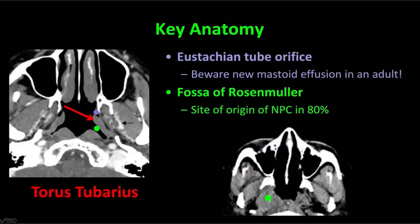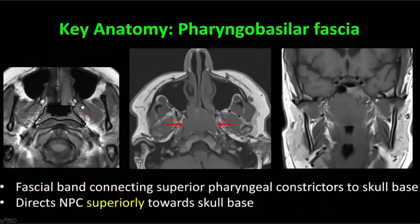Some key anatomy: the key is to look for the torus tubarius, which is the cartilaginous outpouching into the lateral wall of the nasopharynx. Above it you'll find the eustachian tube orifice, and below it is the lateral fossa of Rosenmuller. The torus tubarius is actually the cartilaginous end of the eustachian tube. If there is a mass in the posterior lateral nasopharynx, it can push this up and block off the eustachian tube. That's why a new mastoid effusion in an adult is a really disturbing sign that should make both the clinician and radiologist look in the nasopharynx. Most nasopharyngeal carcinomas start in this lateral fossa of Rosenmuller, providing a perfect scenario for blocking off the eustachian tube.